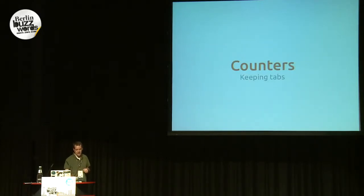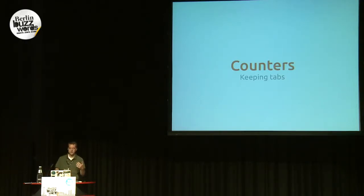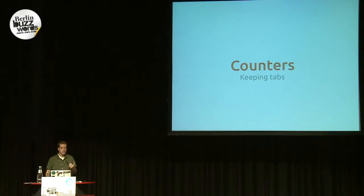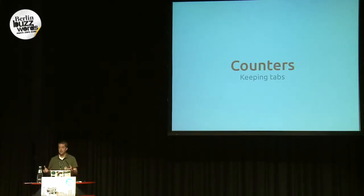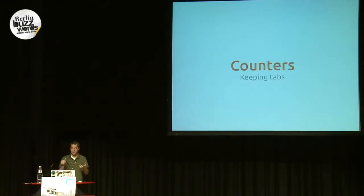The next data type is counters. Everybody loves counters — you want to count things all the time. In a CRDT, they're a replicated integer supporting two operations: increment and decrement. They're useful for tracking things like numbers of logged-in users or click-throughs on an advertisement. The simplest type is a commutative or operation-based data type, since add and subtract are commutative mathematical operations, so any delivery order produces the same value in the end.